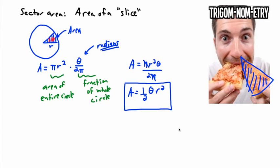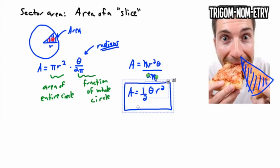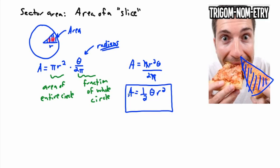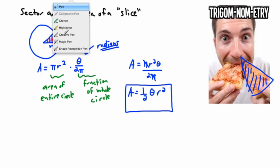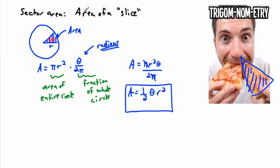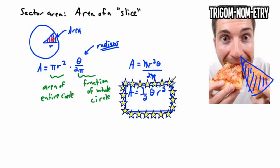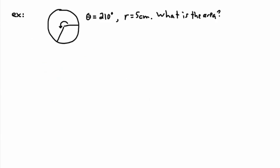So we can calculate the area of any slice using A equals one half theta r squared, where theta is in radians. Now let's do an example. Let's say we have an angle of 210 degrees and r is 5 centimeters. What's the area?